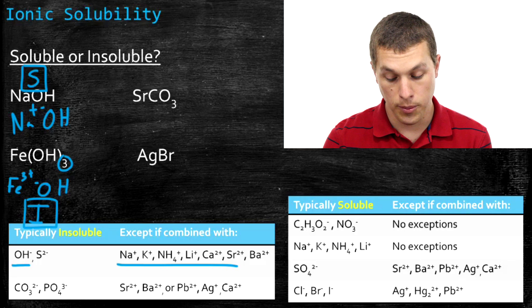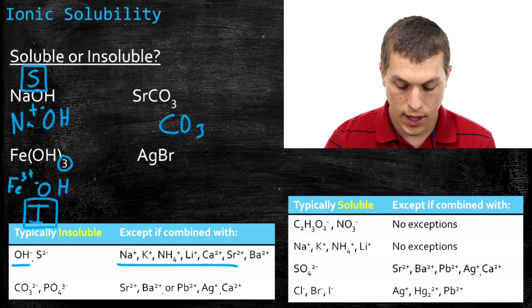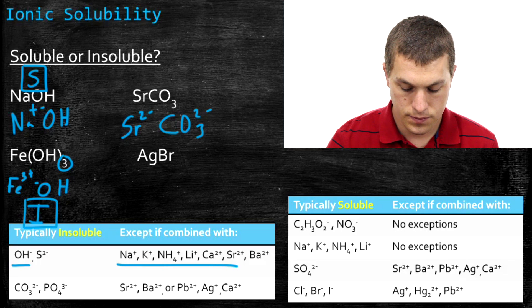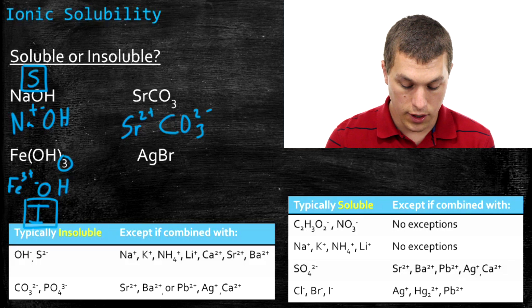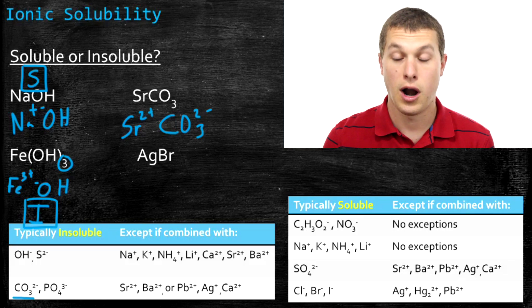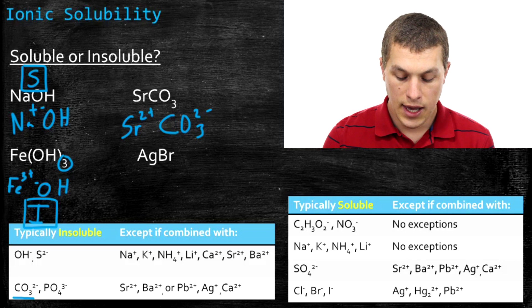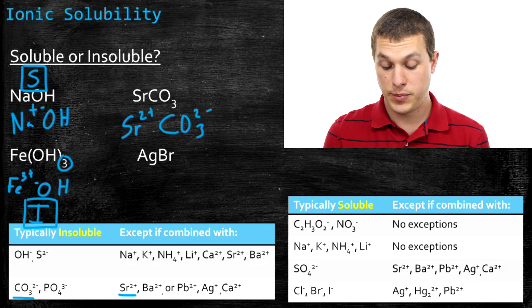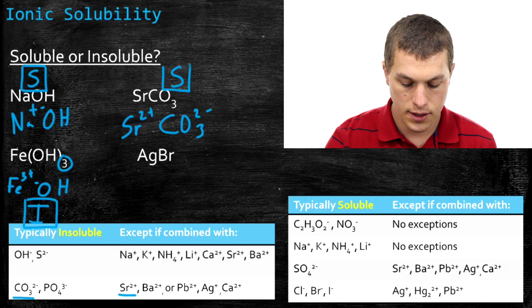Now let's look at strontium carbonate. The two ions are Sr²⁺ and CO₃²⁻ — carbonate has a 2− charge, so strontium has a 2+ charge. Looking through our solubility tables, in the second row of the insoluble list we see carbonate — carbonates are typically insoluble. Checking the exception ions, we see right away that strontium is one of them. So though carbonate is typically insoluble, when paired with strontium it is soluble. Strontium carbonate is soluble.